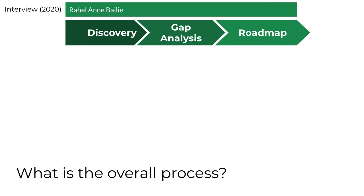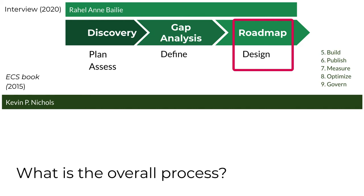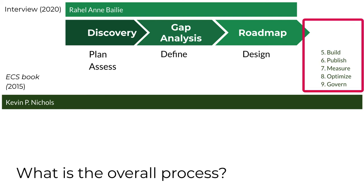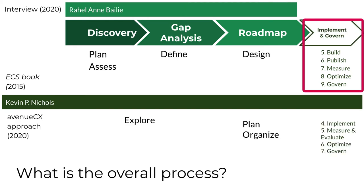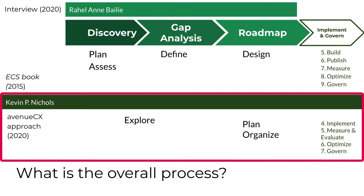Rahel's simple three-phase process is shown on this slide. It's similar to how Sarah O'Keefe, CEO of Scriptorium, describes content strategy as a form of management consulting. But it's not how everyone describes the process. If you've read Nichols' Enterprise Content Strategy book, you know he describes a nine-phase process. Note that Kevin's phases of plan and assess appear to fit within what Rahel calls the discovery phase, his define phase fits within Rahel's gap analysis, and his design phase fits Rahel's roadmap phase.